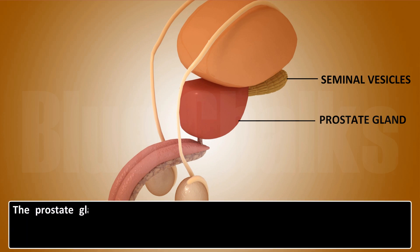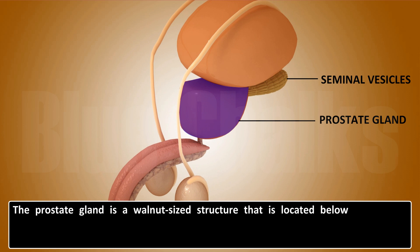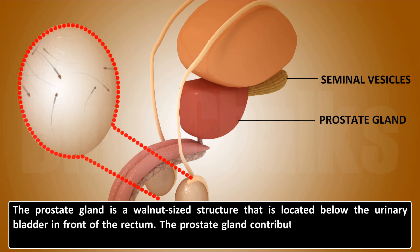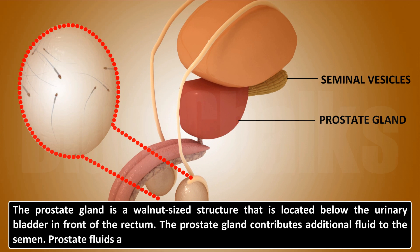The prostate gland is a walnut-sized structure located below the urinary bladder in front of the rectum. The prostate gland contributes additional fluid to the semen. Prostate fluids also help to nourish the sperm.